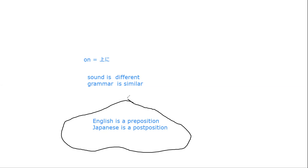In second language acquisition, people have noticed that Japanese people don't make mistakes with word order — even though there are fundamental differences: object before or after the verb, position before or after in prepositions or postpositions. Big difference, but no mistakes. That's not really explained. People have noticed it, but it's not really explained.